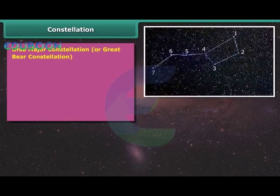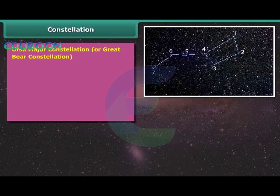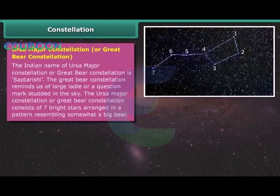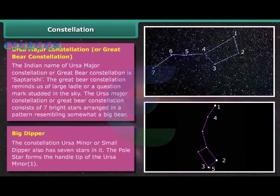Ursa Major Constellation or Great Bear Constellation. The Indian name of Ursa Major Constellation or Great Bear Constellation is Saptarishi. The Great Bear Constellation reminds us of large ladle or a question mark studded in the sky. The Ursa Major Constellation consists of seven bright stars arranged in a pattern resembling somewhat a big bear. The constellation Ursa Minor or Small Dipper also has seven stars in it. The pole star forms the handle tip of the Ursa Minor.